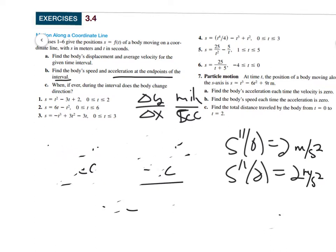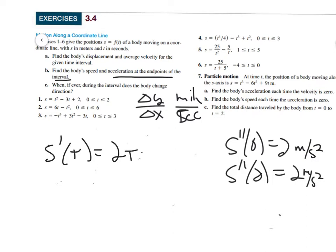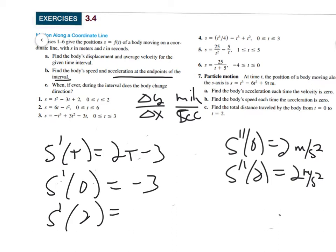Speed is always positive — the absolute value of velocity. So s'(0) = -3, meaning the speed is 3 meters per second. And s'(2) = 1, so the speed is 1 meter per second. Think of it like those pull-back toy cars: the instant it starts it's traveling at 3 meters per second. That completes part B.